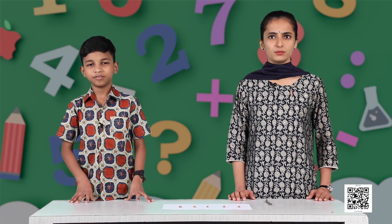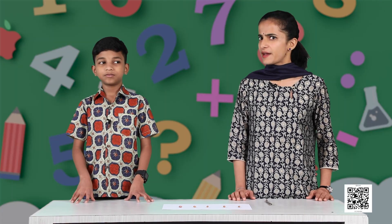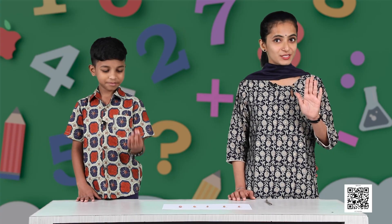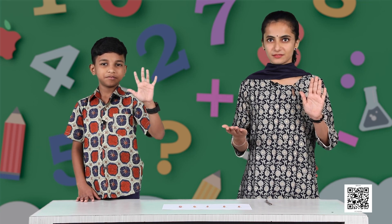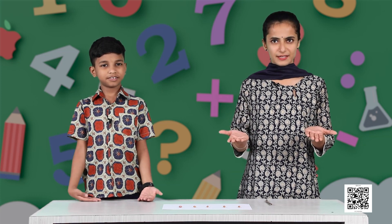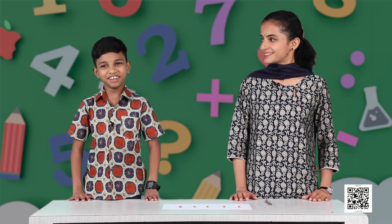Dear learners, can you think about why we are talking about the numbers five and ten so much? We call five and ten the handy numbers. Can you think why? Look at your hand — how many fingers do you have? Five. And in the other hand? Five. And together they make ten. Since we can count five fingers and ten fingers on our hands, we call them handy numbers.